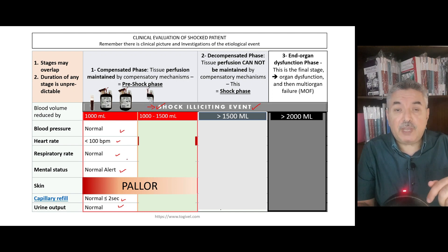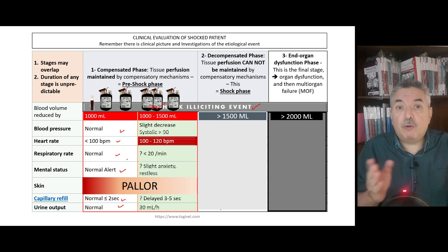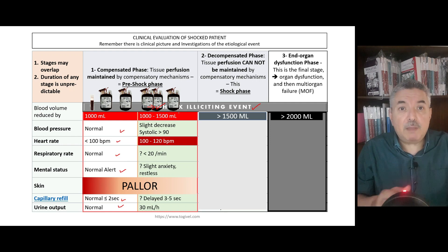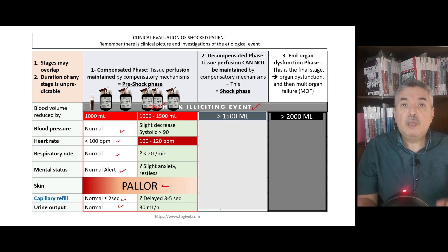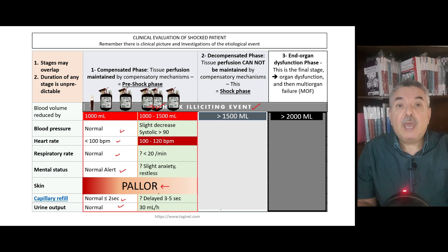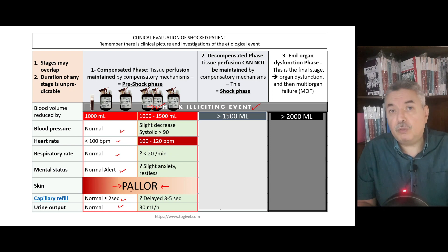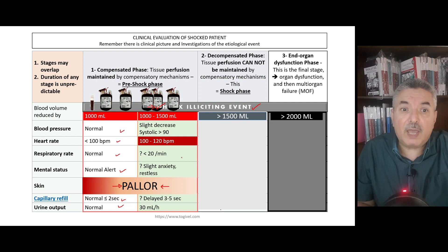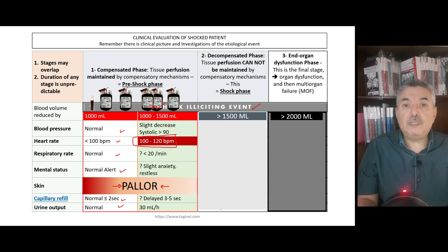In the late compensated phase, pallor will definitely be present — though pallor simply reflects reduced hematocrit and may already be present at the start if the patient is anemic. This deserves treatment and blood replacement even for anemia alone, because it is better to enter shock with a good hematocrit. In the late compensated phase, the key finding is tachycardia: a heart rate of 100 to 120 beats per minute, along with pallor.